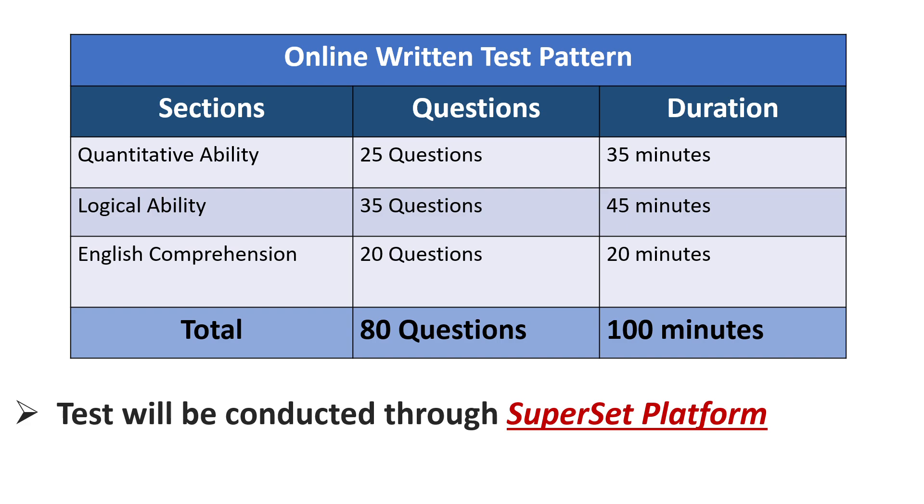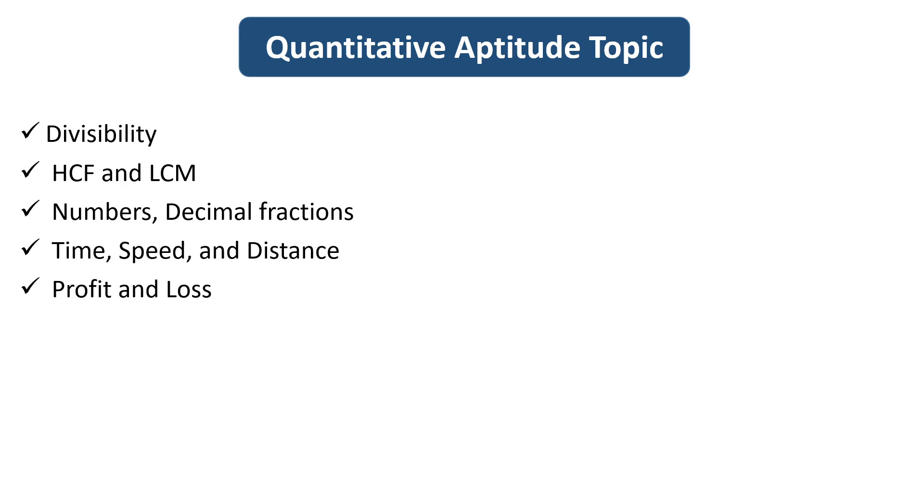So first we will see the important topics which you should cover in quantitative aptitude. The topics are divisibility, HCF and LCM, numbers and decimal fraction, time, speed and distance, profit and loss, simple and compound interest, permutation and combinations and the last one is probability.